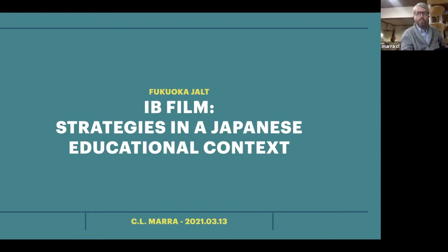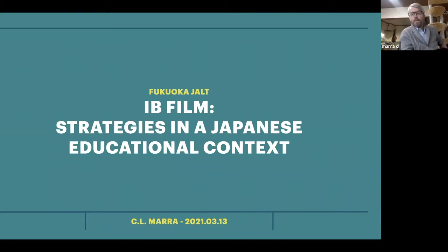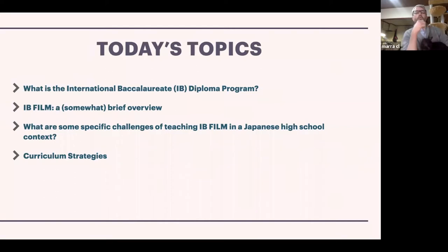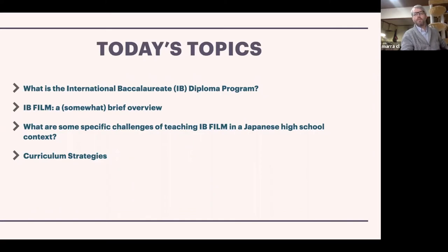I'm going to be talking about the IB film class and some general strategies that I've come up with, because it's a bit of a challenge teaching this class in a Japanese school context. I'm going to run through what the IB program is and those educational goals, and then in particular why that's challenging within a Japanese high school with kids that have been conditioned in an educational system that has sort of opposite goals to what the IB mission statement sets out.